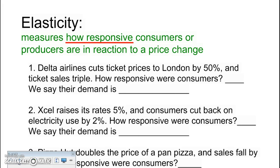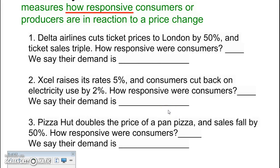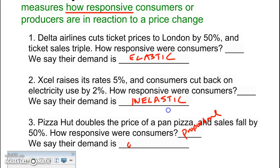We're going to spend the rest of our time talking about elasticity — the concept of measuring how responsive consumers or producers are to a change in price. If Delta Airlines cut ticket prices to London by 50% and ticket sales tripled, we'd call that elastic demand. If Xcel Energy raised rates 5% but consumers only cut back electricity use by 2%, that's inelastic. If Pizza Hut doubles the price of pan pizza and sales fall by 50%, that's a proportional response — unit elastic. Those are the three introductory terms: elastic, inelastic, and unit elastic.